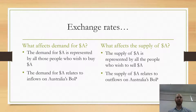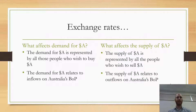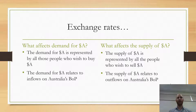In general, we've got factors that affect the demand for the Australian dollar and the supply of the Australian dollar. The demand for the Australian dollar is represented by all those people who wish to buy the Aussie dollar. The supply of the Australian dollar is represented by all the people who wish to sell the Australian dollar. So: demand for Australian dollar means people want to buy it; supply of Australian dollars means people who want to sell it.